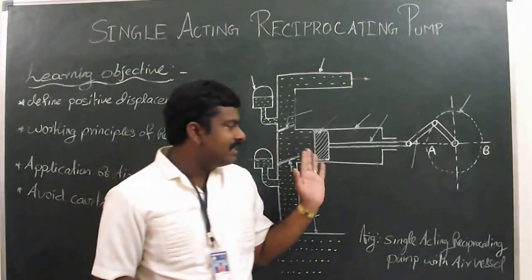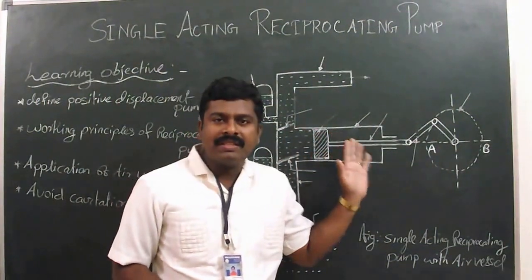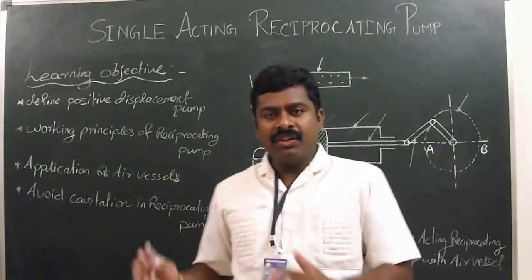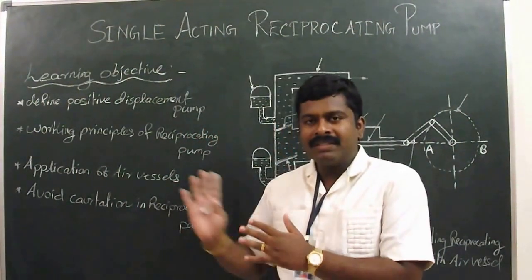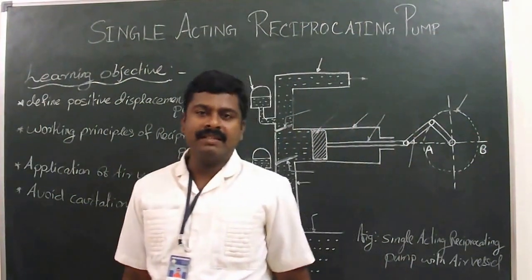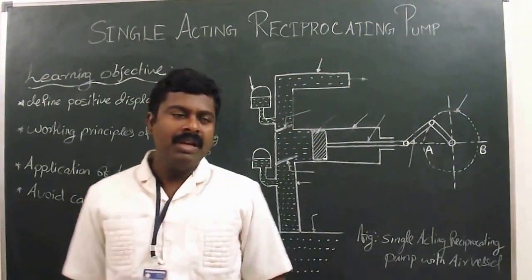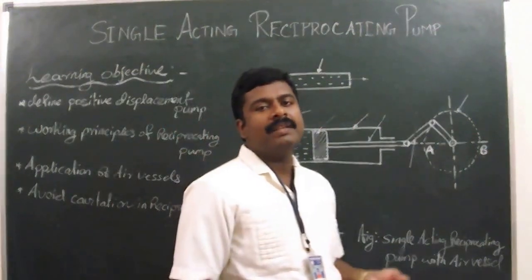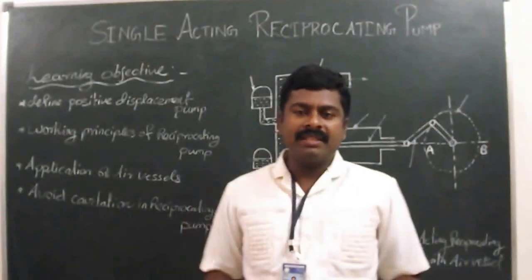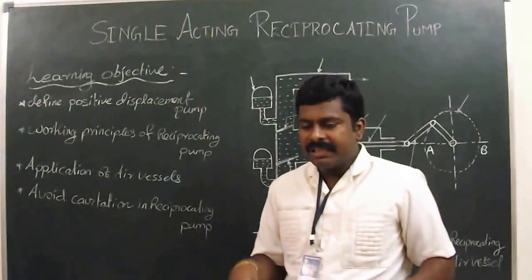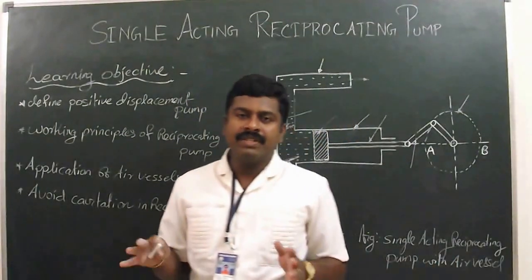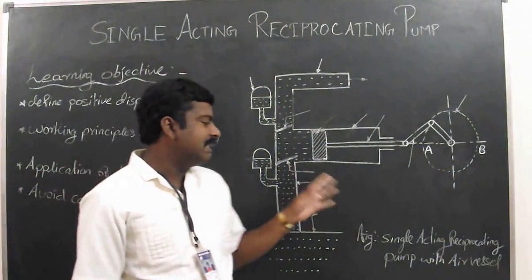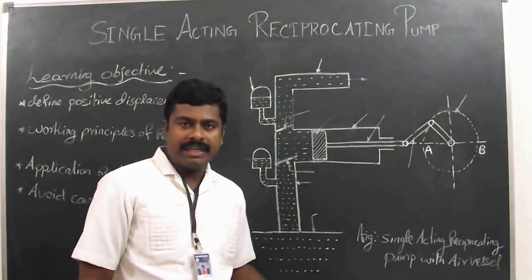The reciprocating pump is classified into Single-Acting Reciprocating Pump and Double-Acting Reciprocating Pump. When the liquid acts on one side it is known as Single-Acting, and when the liquid acts on both sides of the cylinder it is known as Double-Acting. Based on the cylinder, there are single cylinder, double cylinder, and triple cylinder types. These are the simple classifications of reciprocating pump.